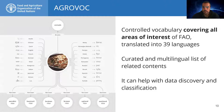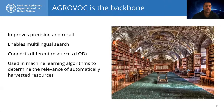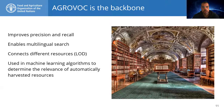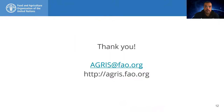An important piece of the Agris infrastructure is AgroVoc. This is a controlled vocabulary covering all areas of interest of FAO. It is translated into 39 languages and is the backbone of Agris. AgroVoc is used within machine learning algorithms that allow Agris to understand the relevance of automatically harvested metadata downloaded from the web. AgroVoc also enables many additional features on the website, such as multilingual search, improvement of precision and recall, and the possibility to connect different resources using linked open data technologies. It is used in several machine learning algorithms both to determine the relevance of harvested resources and to classify resources using this multilingual thesaurus.